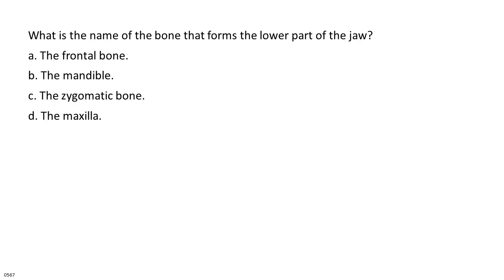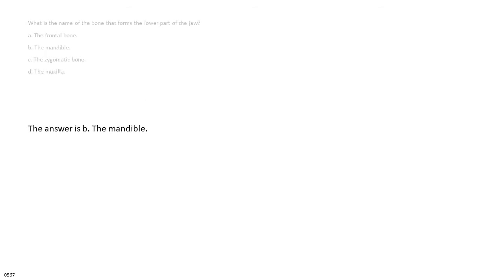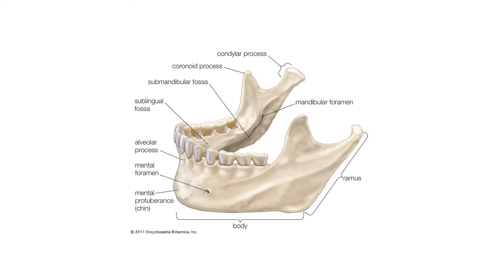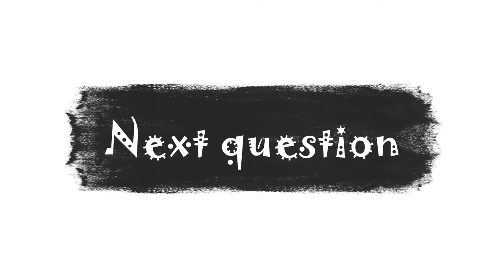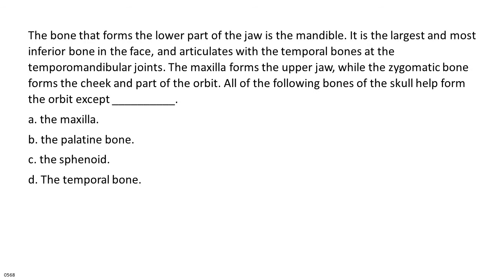What is the name of the bone that forms the lower part of the jaw? A. The frontal bone. B. The mandible. C. The zygomatic bone. D. The maxilla. The answer is B, the mandible. The bone that forms the lower part of the jaw is the mandible. It is the largest and most inferior bone in the face, and articulates with the temporal bones at the temporomandibular joints. The maxilla forms the upper jaw, while the zygomatic bone forms the cheek and part of the orbit.